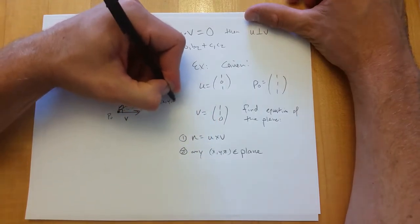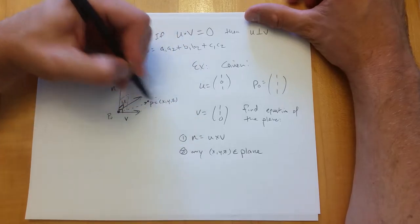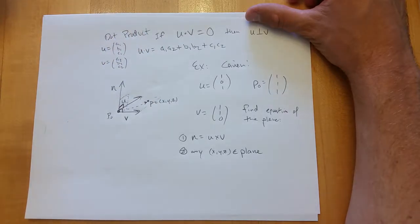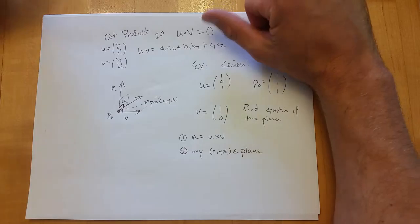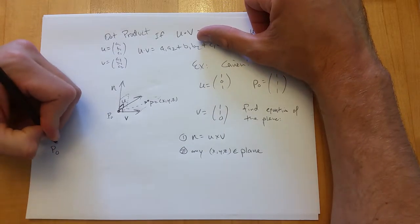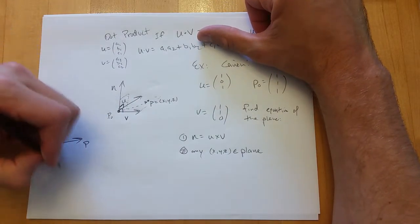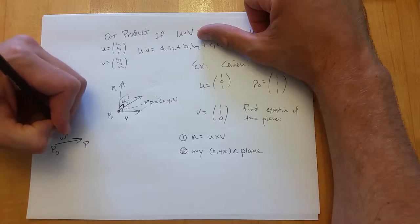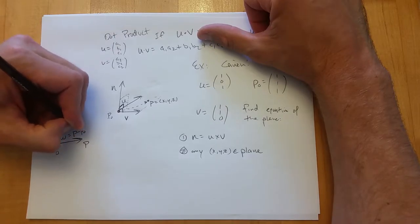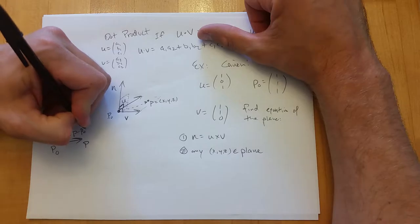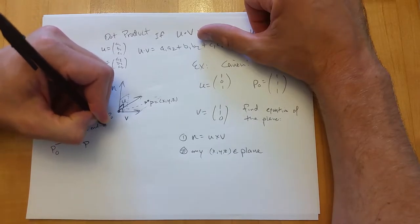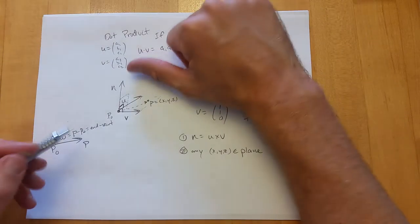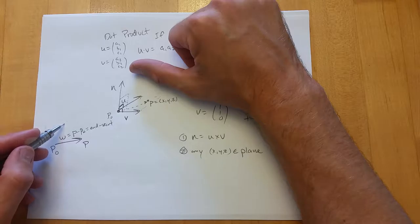Any point (x, y, z) in the plane will satisfy the equation we're building. We need the vector between two points: to go from p₀ to p, you subtract them — end minus start. We'll call this w, so w = p minus p₀.